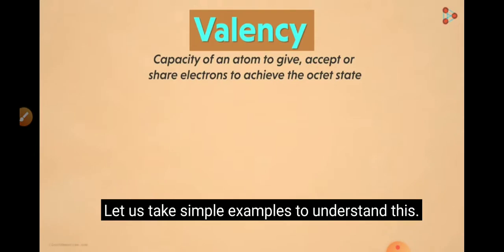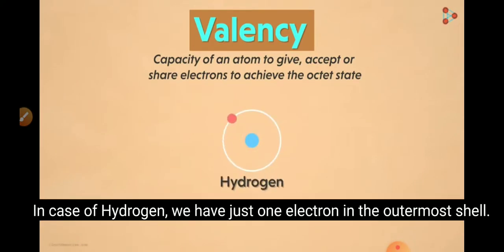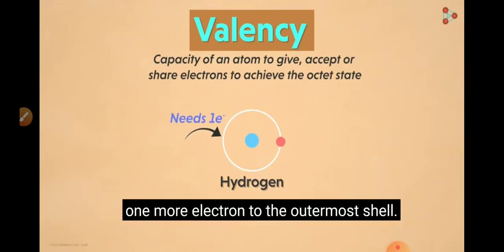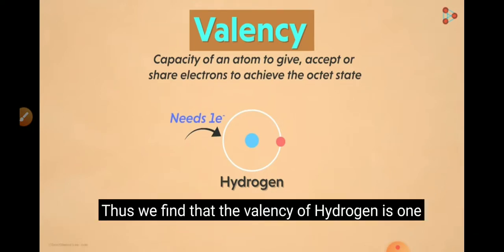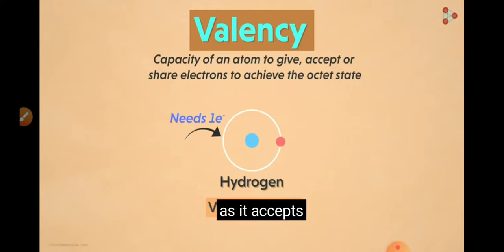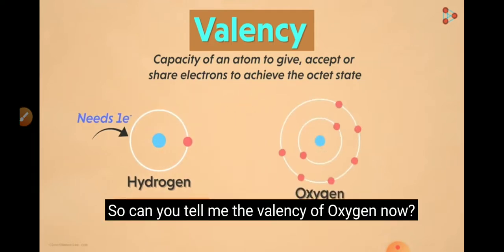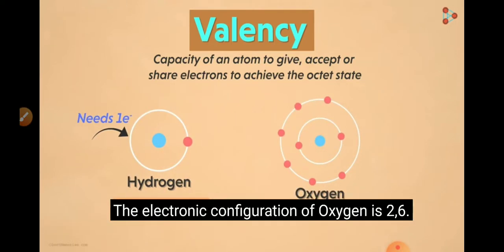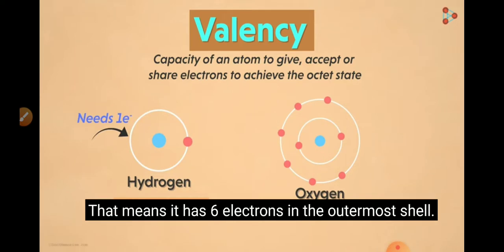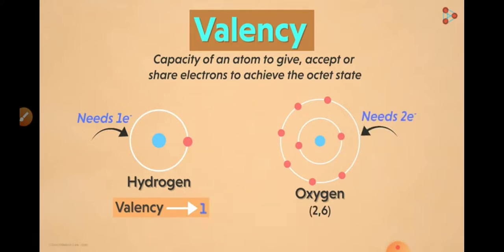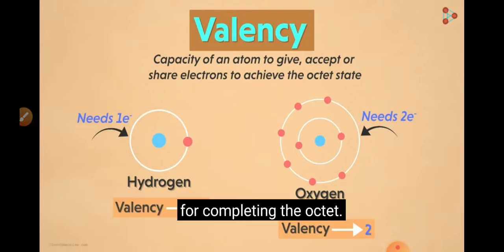Let us take simple examples to understand this. In case of hydrogen, we have just one electron in the outermost shell, so it has to add one more electron to complete it. Thus, the valency of hydrogen is 1 as it accepts or sometimes shares electrons with atoms of other elements. The electronic configuration of oxygen is 2,6, meaning it has six electrons in the outermost shell. It needs two electrons to complete the octet. Thus, the valency of oxygen is 2 — it accepts two electrons from other atoms for completing the octet.